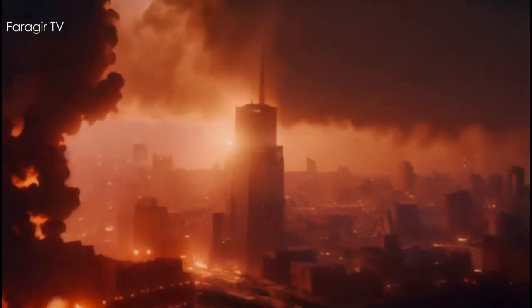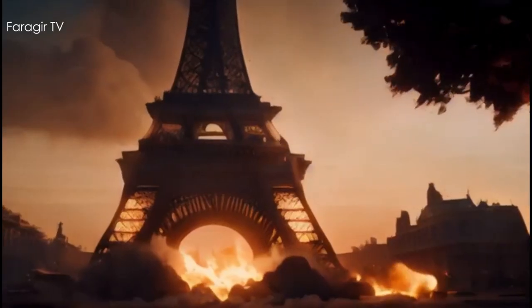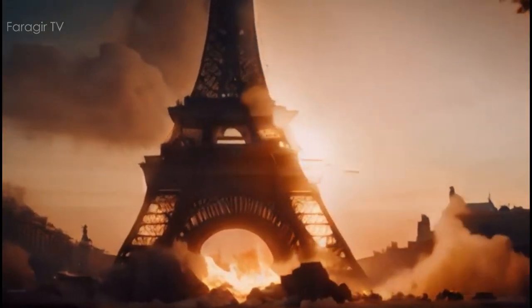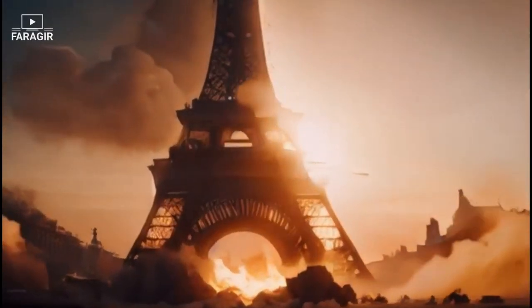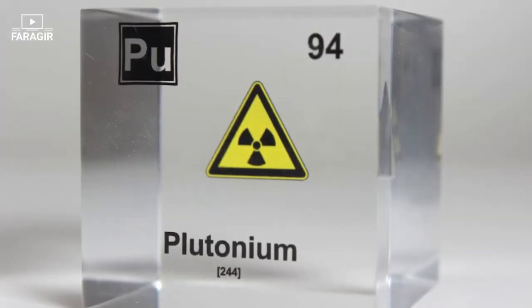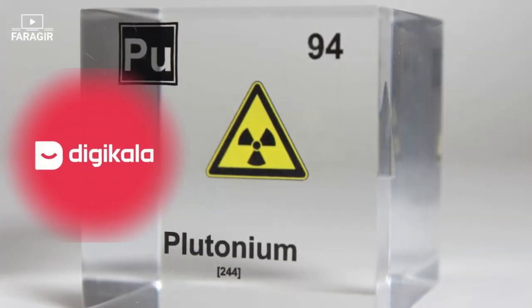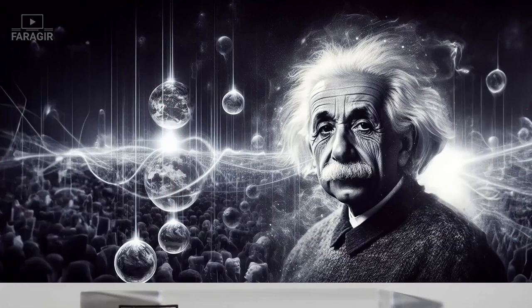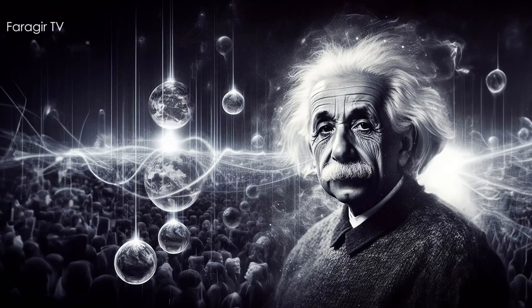Hello, my dear friends. Today we are going to explain to you in a simple way how the atomic bomb works. If you can get the enriched uranium and the materials needed, you are almost more than halfway to making the atomic bomb.